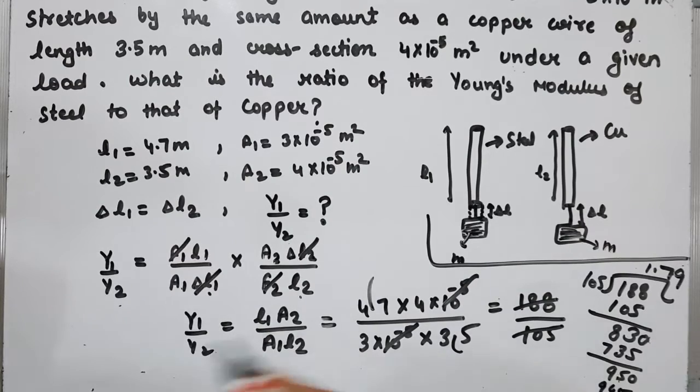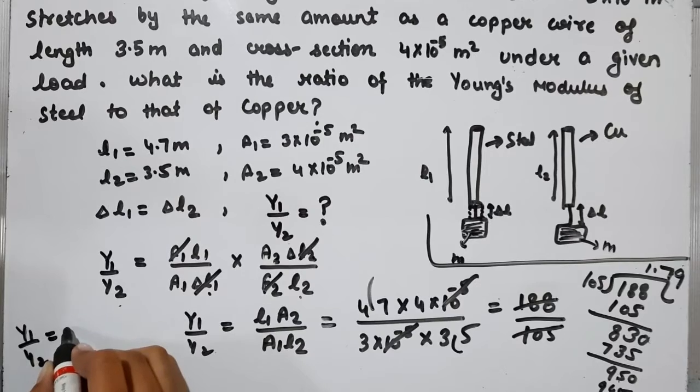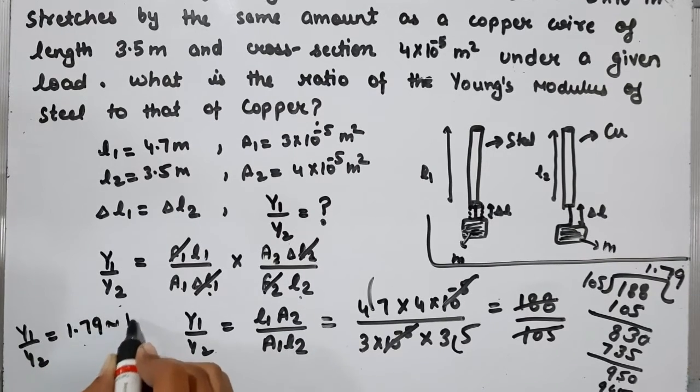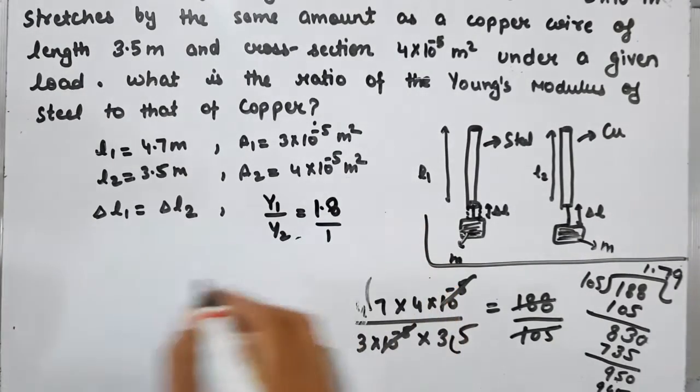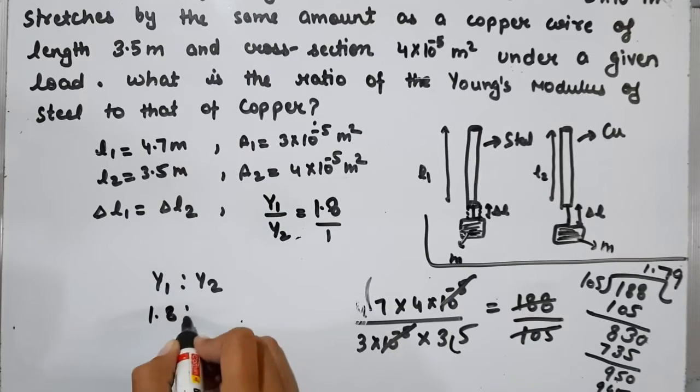So Y1/Y2 = 1.79, which can be written as approximately 1.8, or the ratio is 1.8:1.